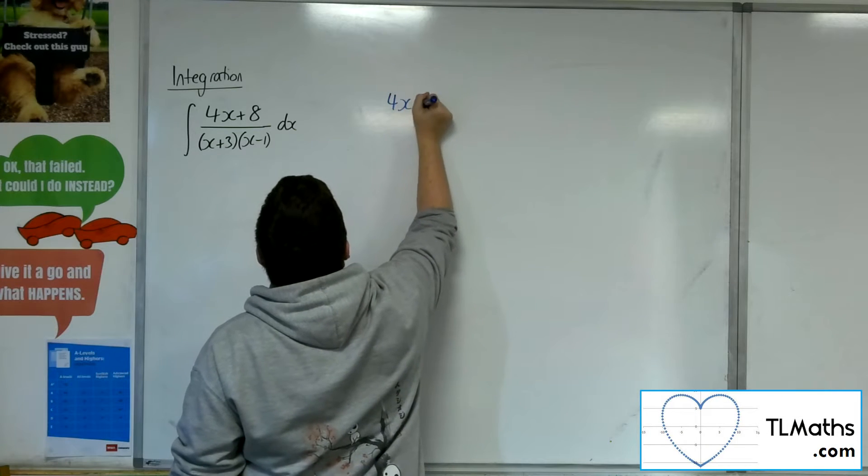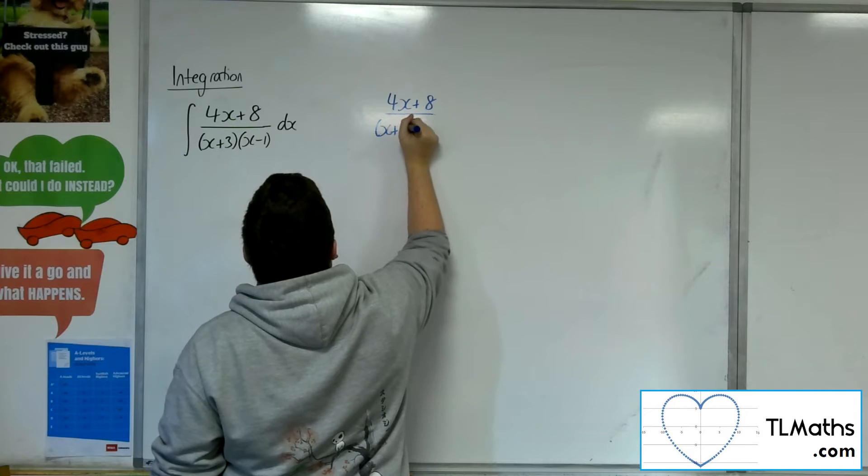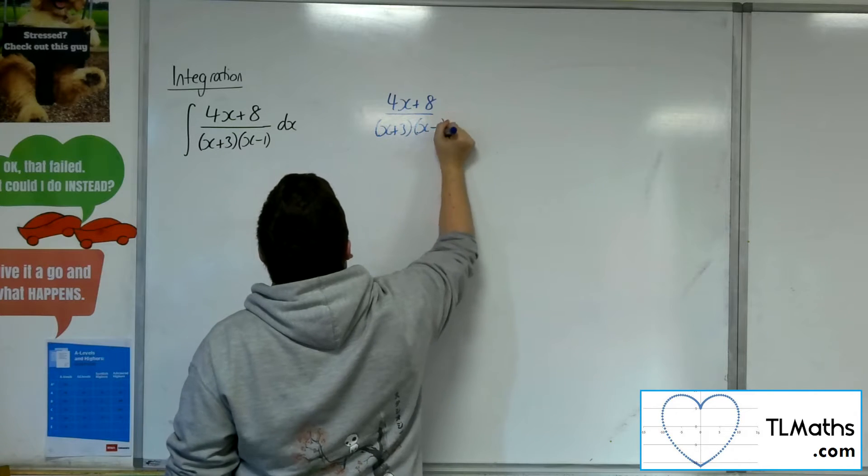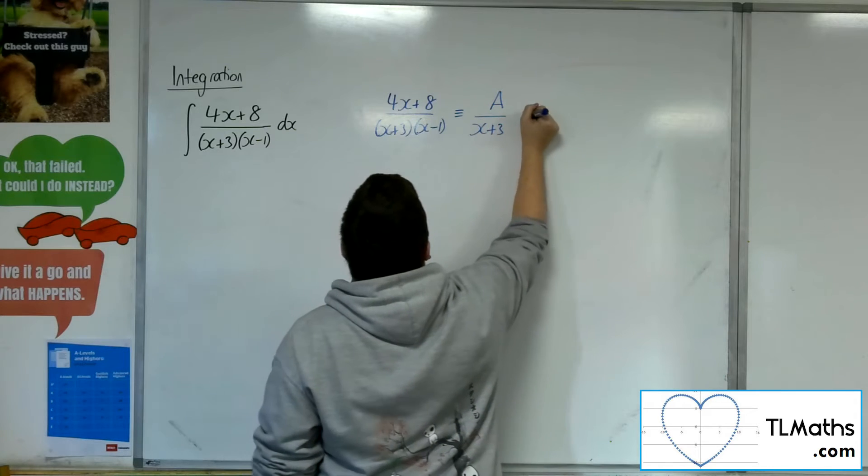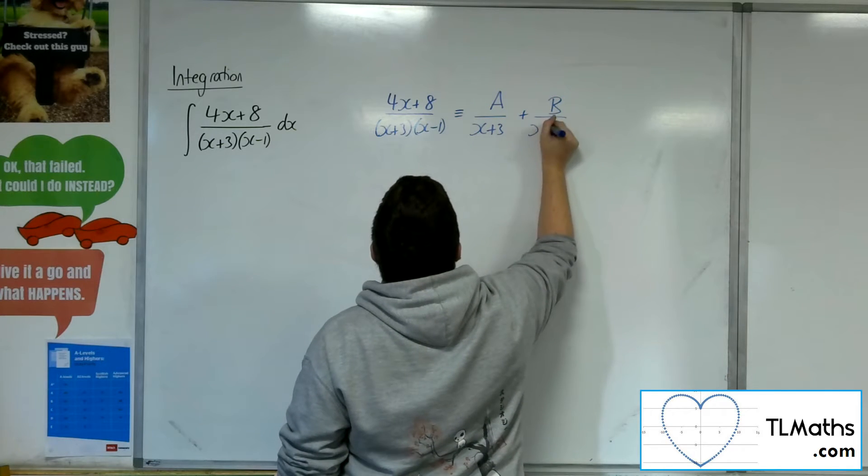So 4x plus 8 over (x plus 3)(x minus 1) will be equivalent to A over x plus 3 plus B over x minus 1.